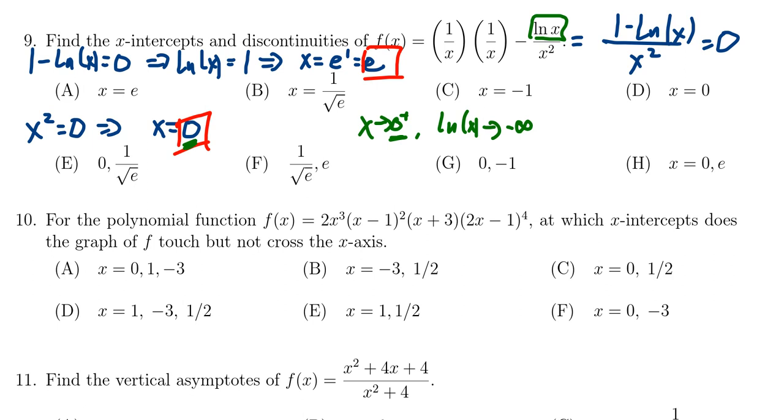There's a vertical asymptote at 0, an x-intercept at e. So if we list the intercepts, the x-intercepts and the discontinuities, we would then get choice H. 0 and e are the x values, these critical numbers we were looking for.